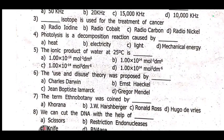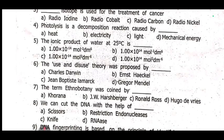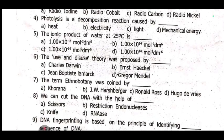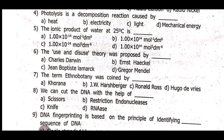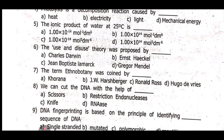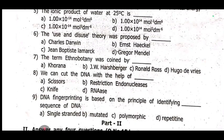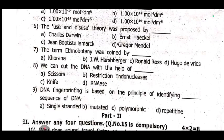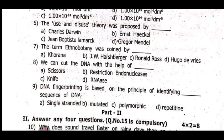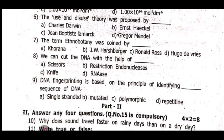Sixth one, the use and disuse theory was proposed by dash. Seventh one, the term ethnobotany was coined by dash. Eighth one, we can cut the DNA with the help of dash. Ninth one, DNA fingerprinting is based on the principle of identifying dash sequence of DNA.